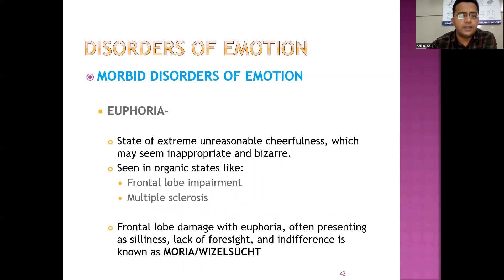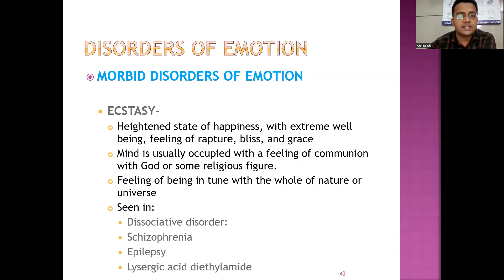Euphoria is a state of extreme, unreasonable cheerfulness which may seem inappropriate and bizarre. It is seen in organic states like frontal lobe impairment and multiple sclerosis. Frontal lobe damage with euphoria often presenting as silliness, lack of foresight, and indifference is known as moria. Ecstasy is the heightened state of happiness with extreme well-being, feeling of rapture, bliss, and grace. The mind is usually occupied with a feeling of communion with God or some religious figure, or a feeling of being in tune with the whole of nature or universe. It is seen in dissociative disorder, schizophrenia, epilepsy, and LSD intoxication.